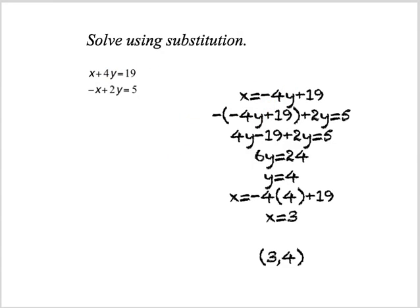I now substitute it in. One important point: this negative requires parentheses for x = -4y + 19. Then I distribute the negative 1 across the quantity to get 4y - 19 + 2y = 5. Solving, I find that y = 4. Then I plug that back into x = -4y + 19 and find that x = 3. This is my ordered pair solution.